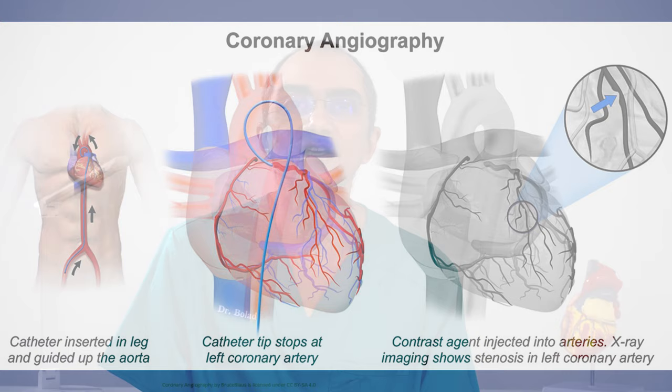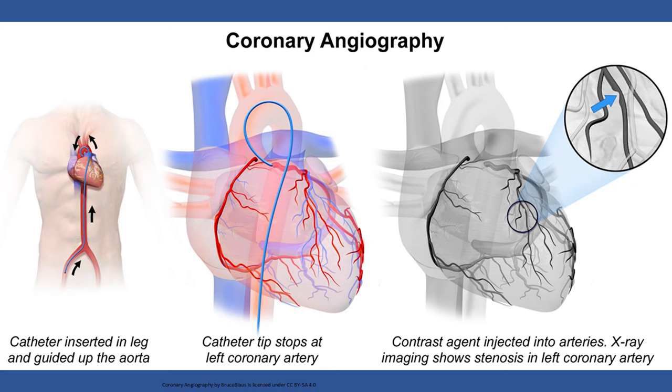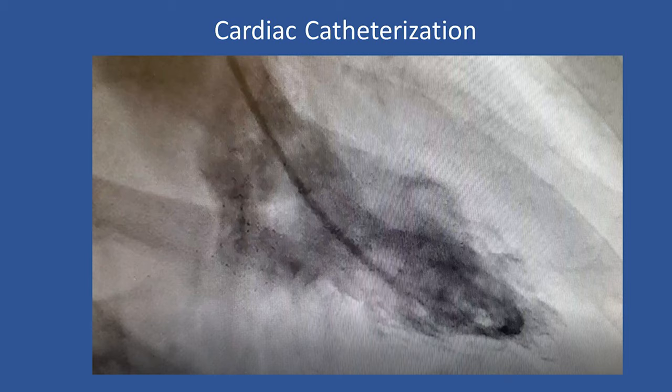In this presentation I will be talking about left heart catheterization, which has two components. When the catheters are passed through the heart to evaluate blockages in the coronary arteries on the surface of the heart, the procedure is known as coronary angiography. When the catheters are passed through the chambers of the left side of the heart to measure pressure, evaluate heart function, or perform invasive work in the chamber of the heart, the procedure is labeled as cardiac catheterization.